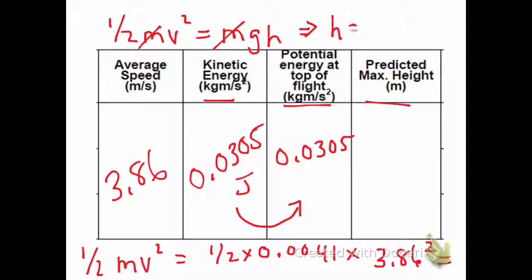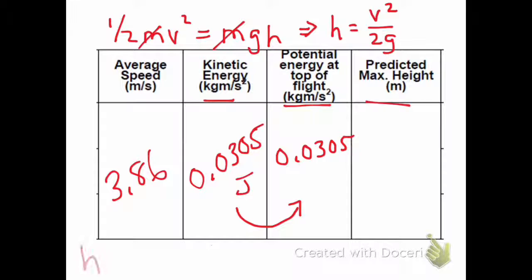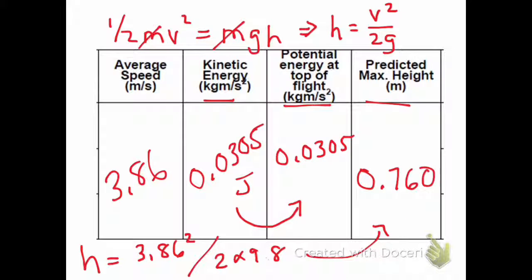Now for our data, the height will be 3.86 squared over 2 times 9.8. That works out to be a predicted height of 0.760 meters.